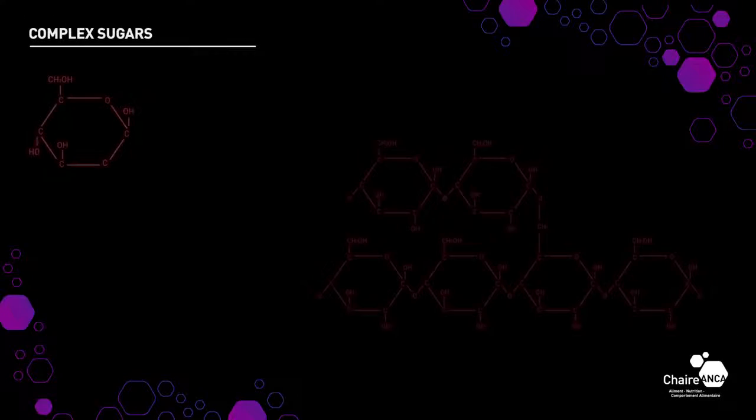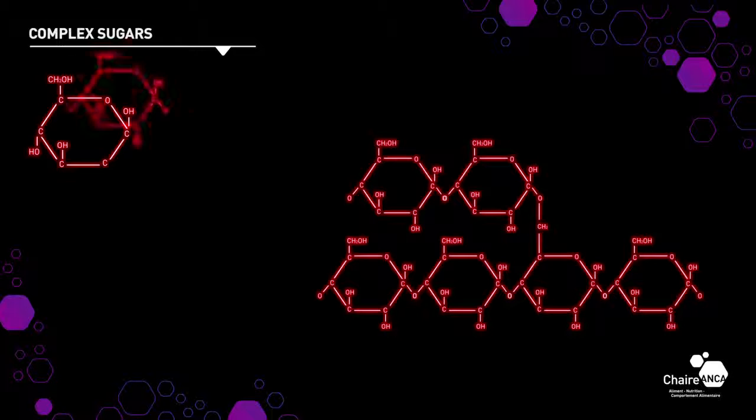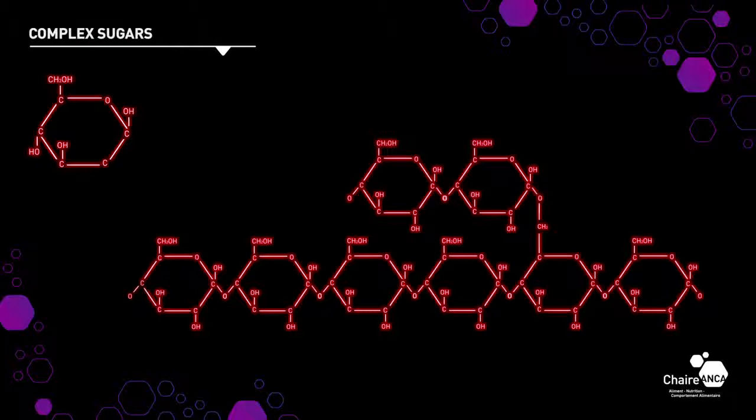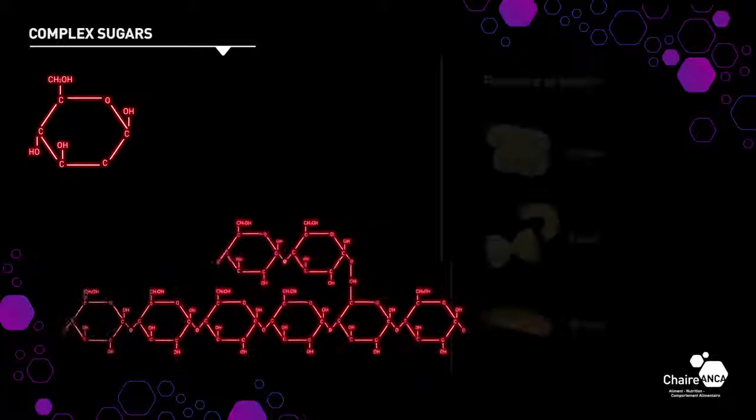Carbohydrates can also occur in more complex arrangements. When many glucose molecules link to create heavier chains, this forms, for example, the starch that is found in potatoes, flour and semolina.